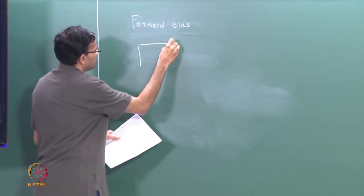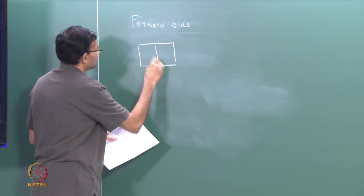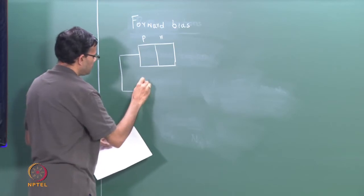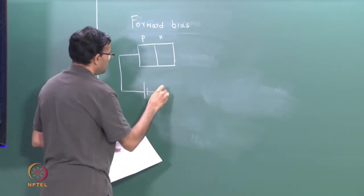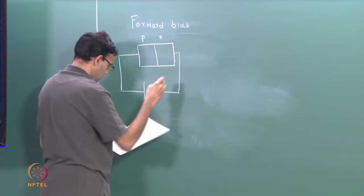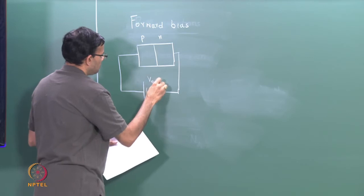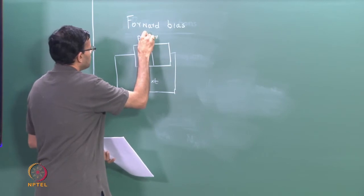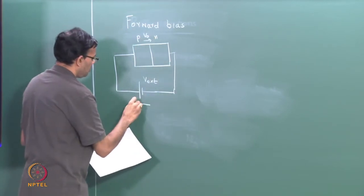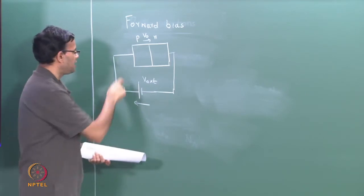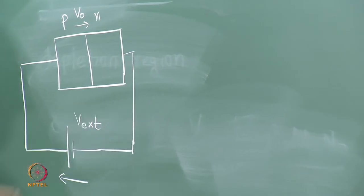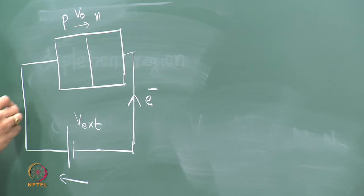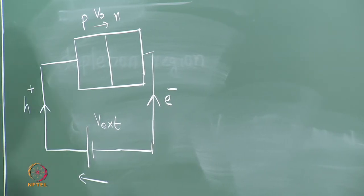In the case of forward bias, this is my schematic p and n. I am going to connect the p to the positive side and n to the negative. Let this be V external. There is a contact potential at the junction, that is your V naught. So in forward bias you are connecting p to the positive and n to the negative, which means you are injecting electrons onto the n-side and injecting holes onto the p-side.